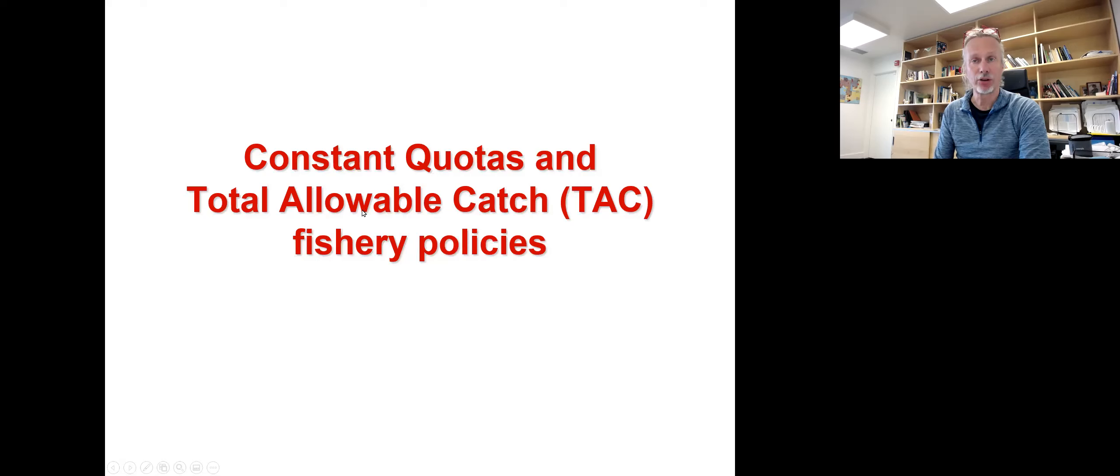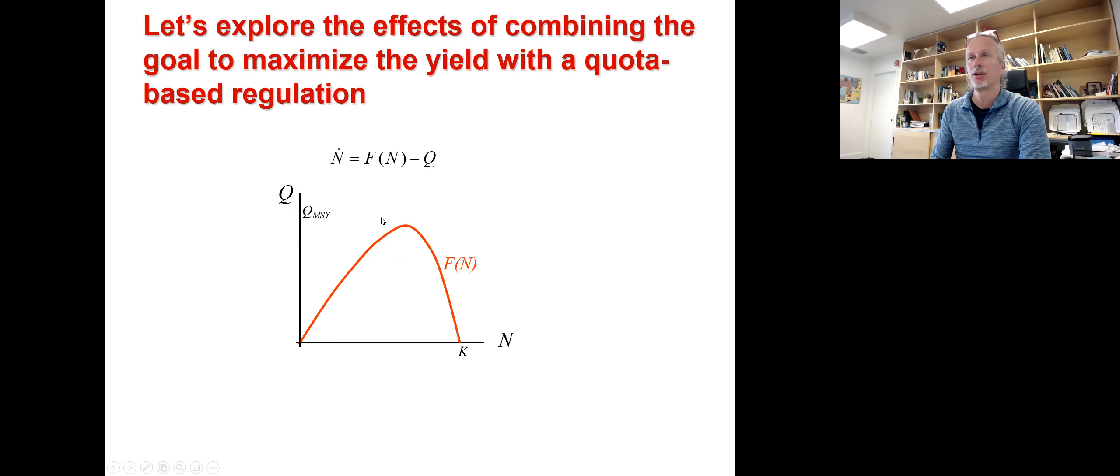Let's start from the first one: constant quotas and total allowable catch (TAC) fishery policies. Let's explore the effect of combining the goal to maximize the yield with a quota-based regulation. The dynamics of our stock can be described by differential equations, dN/dt, and f(N) represents the stock recruitment function. It could be a logistic form or anything else. And Q is the quota, the constant quota that we want to remove from the population year after year.